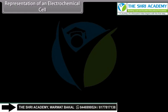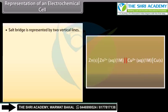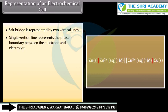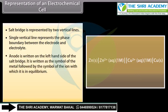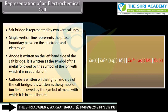Representation of an Electrochemical Cell: The salt bridge is represented by two vertical lines; a single vertical line represents the phase boundary between the electrode and electrolyte. The anode is written on the left-hand side of the salt bridge, as the symbol of the metal followed by the symbol of the ion with which it is in equilibrium. The cathode is written on the right-hand side, as the symbol of the ion first, followed by the symbol of the metal.